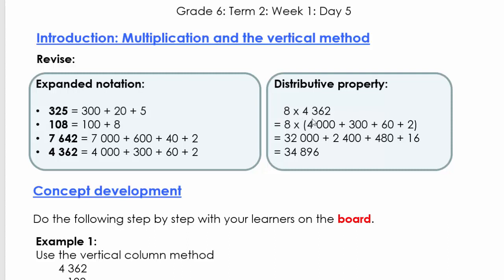What I'm going to do is write 8 times, and I'm going to break it up: 4,000 + 300 + 60 + 2. Now you're going to multiply the 8 with each of them. So 8 times 4,000 is 32,000. 8 times 300 is 2,400. 8 times 60 is 480, and 8 times 2 is 16.